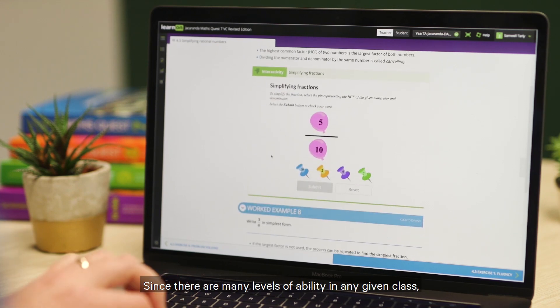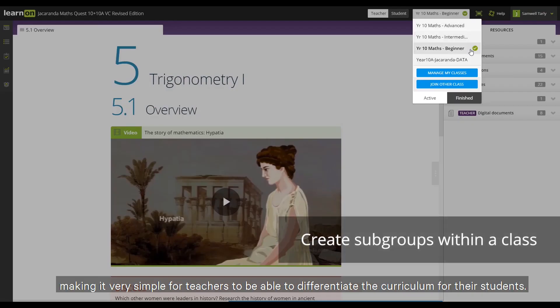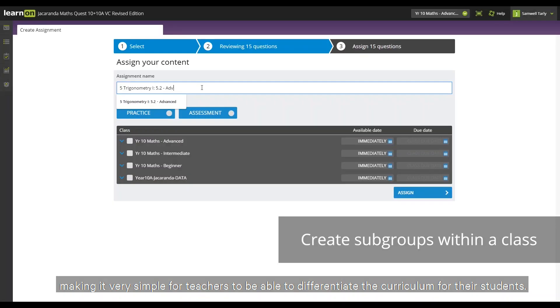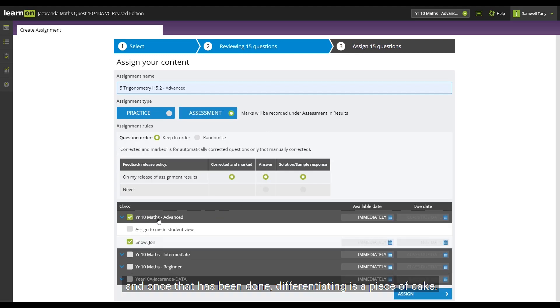Since there are many levels of ability in any given class, our LearnOn platform offers the ability to create subgroups within a class, making it very simple for teachers to be able to differentiate the curriculum for their students. Setting up subgroups is simple to complete, and once that has been done, differentiating is a piece of cake.